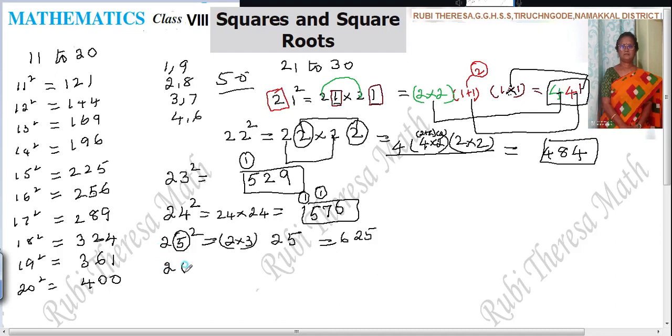Next one is 26 square. 26 into 26. But directly you can do it. 6 6's are 36. Reminder 3. 6 plus 6 is 12. 12 into 2. Don't forget that. Multiply by 2. You should not forget that. 6 plus 6 is 12. 12 2's are 24. 24 plus 3 is 27. Reminder is 2. 2 2's are 4. 4 plus 2 is 6. 676.